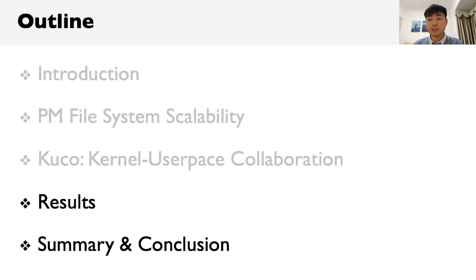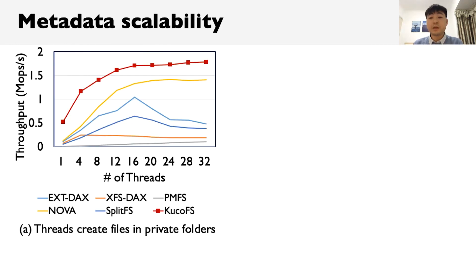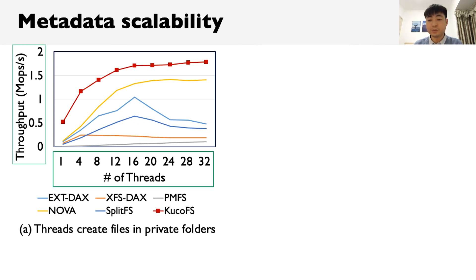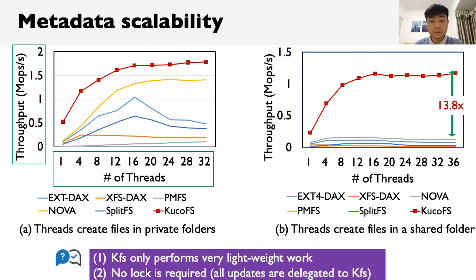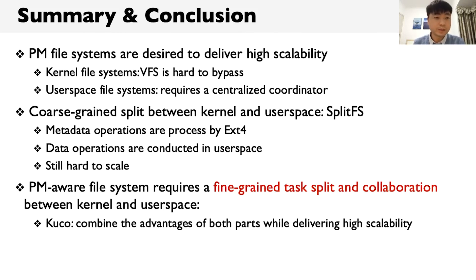We evaluate metadata scalability by testing create operations. The x-axis is the number of threads and the y-axis is the throughput. KUKU achieves the highest throughput among compared systems. When multiple threads create files in a shared folder, only KUKU achieves high scalability, and its throughput is 13.8 times higher than others. In summary, KUKU is a kernel-userspace collaborative persistent memory file system that achieves high scalability through collaborative indexing, two-level locking, and version arrays. Thank you for watching.